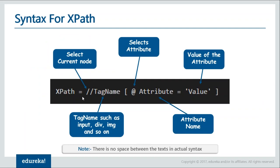Your XPath always starts with two forward slashes — that is a relative XPath. It is called relative because it starts from the current node. An absolute XPath always starts from the parent node with a single forward slash. In a relative XPath, it starts with the current node and double forward slashes, followed by the tag name, and within square brackets you give the attribute preceded by the @ symbol, equal to the value of that attribute.